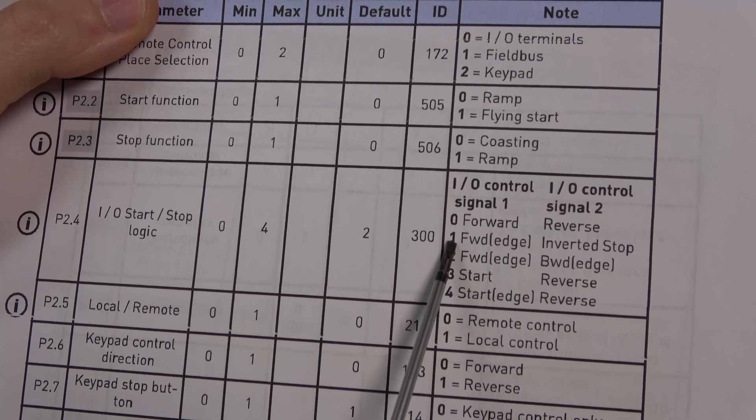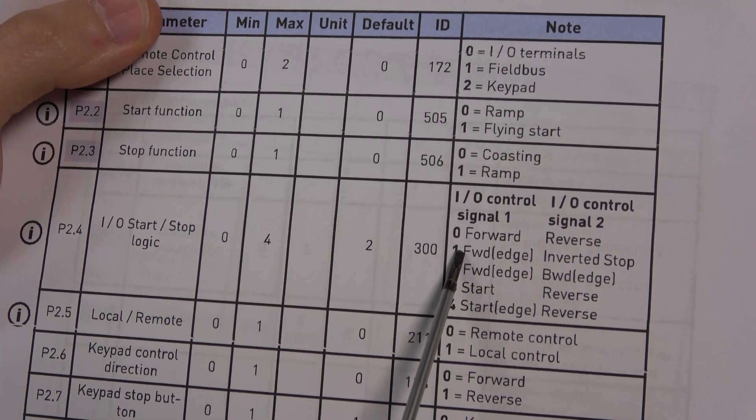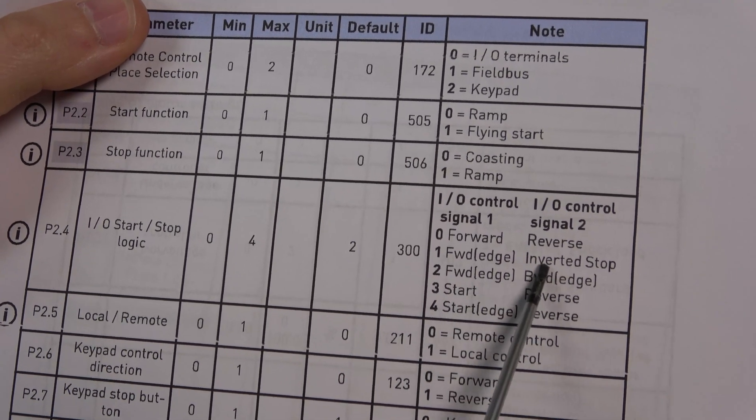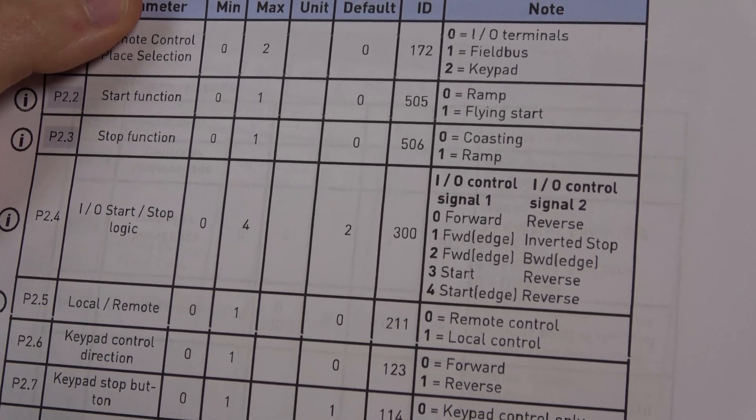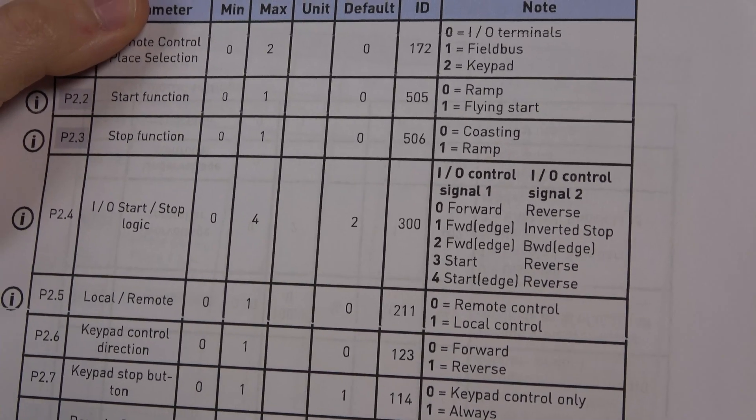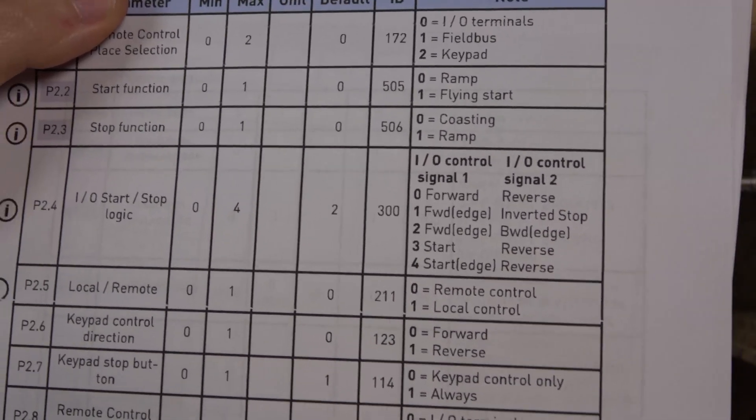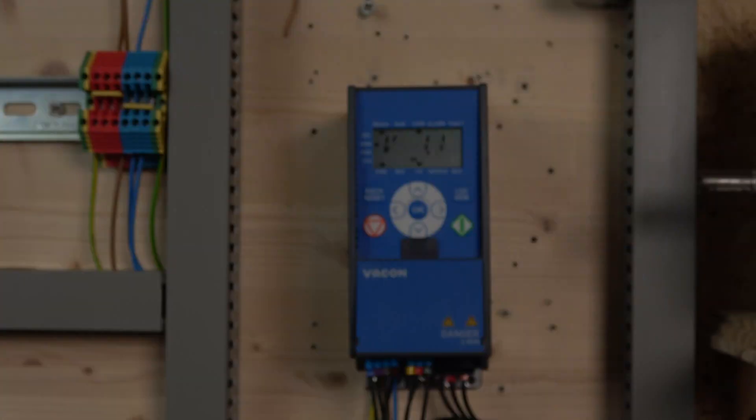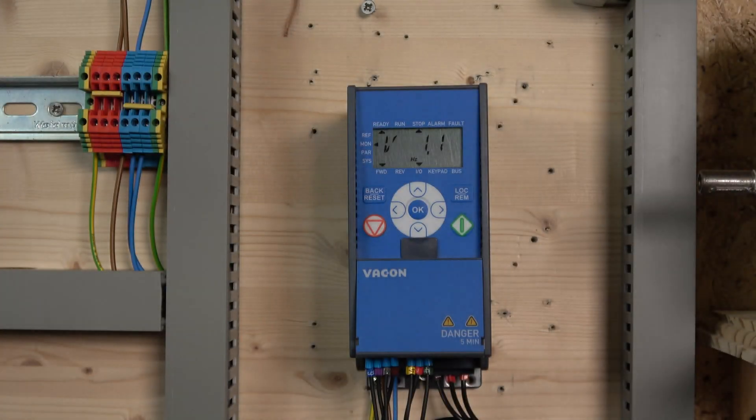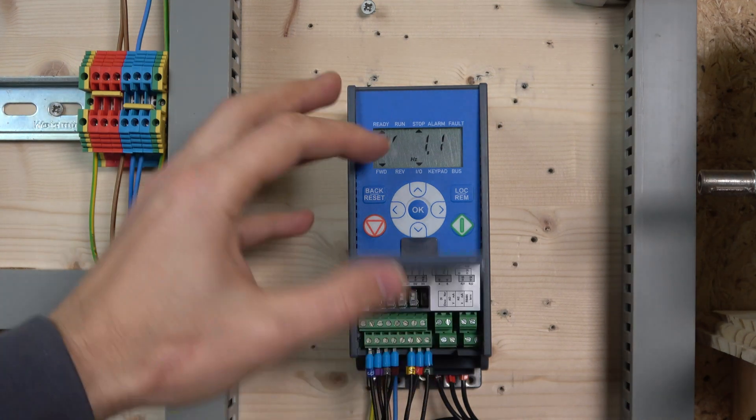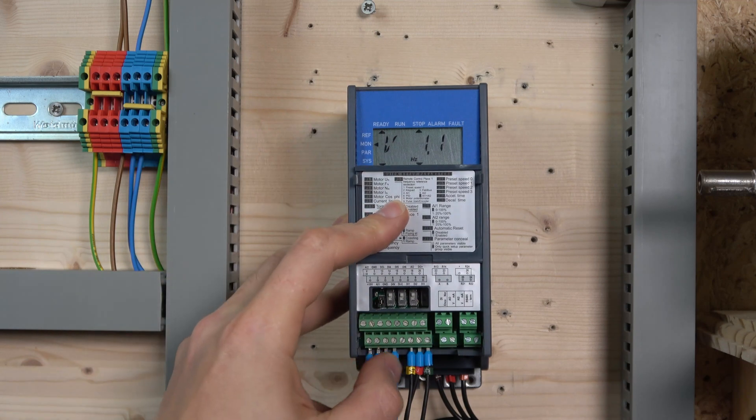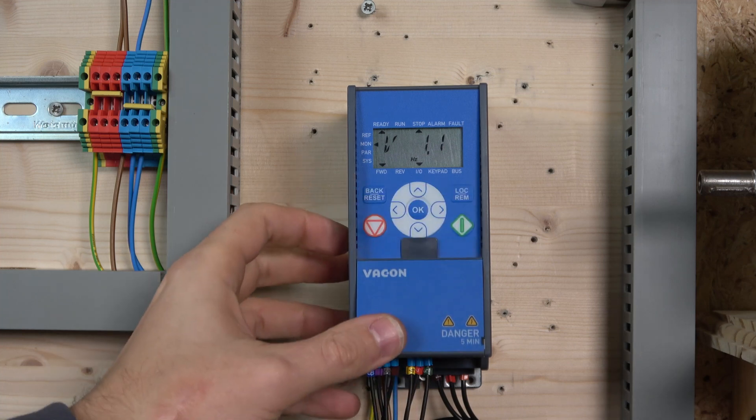The inverted stop will latch the input. It does the same for reverse, which we need to program into digital input 3. Once we change that, we reprogram digital input 1 as start and digital input 2 as stop.